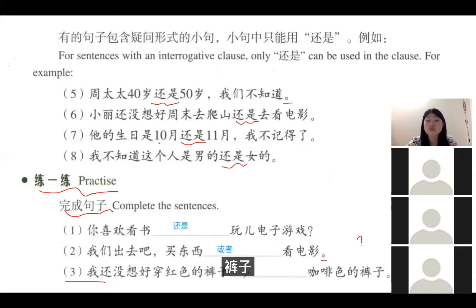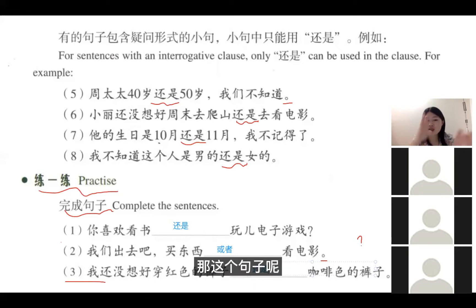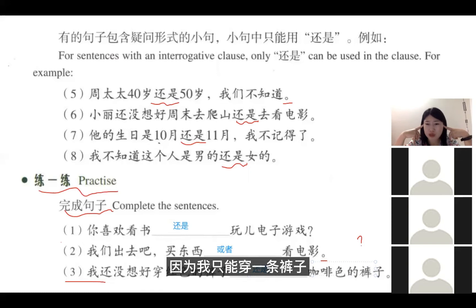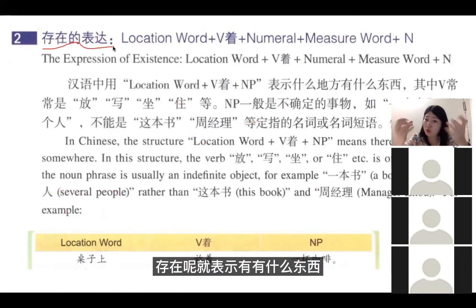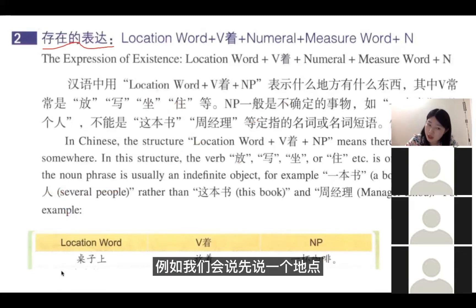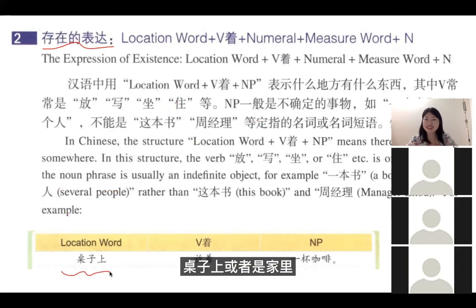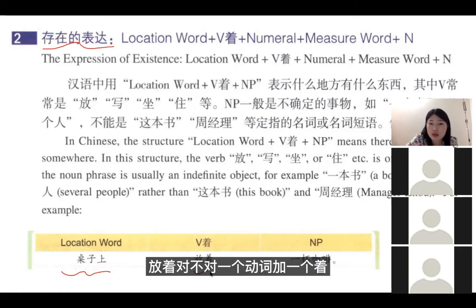我还没想好穿红色的裤子或者咖啡色的裤子——这里用还是比较好。也就是说，我不知道哪个更好，因为我只能穿一条裤子，我现在不知道穿哪一条，所以有一个疑问。好，我们看下面。